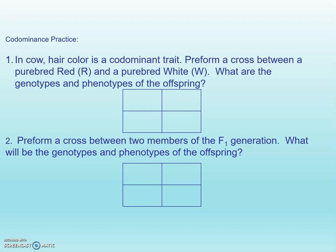Now for your next practice — on your own paper, we're going to look at the cattle. It might be helpful to make yourself a key. In cows, hair color is codominant. We're going to perform a cross between a purebred red — remember, purebred is homozygous — that's going to be big R, big R. Then we're going to take a purebred white, again homozygous, so WW. What are the genotypes and phenotypes of your offspring in boxes one, two, three, and four? Then just like before, we're going to take two members of this F1 generation, work out the next generation, and see what we get in the cattle grandkids. When you finish, we'll go over it.